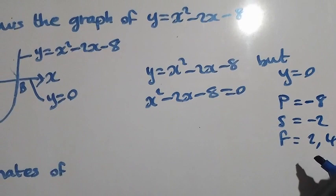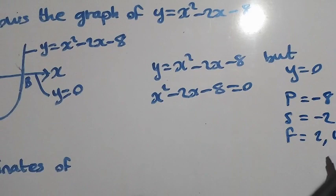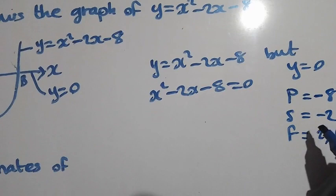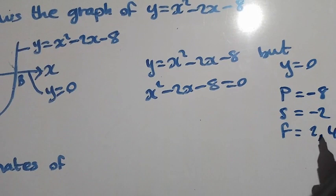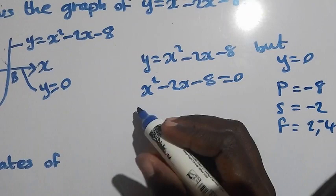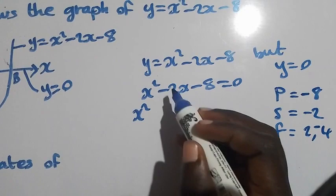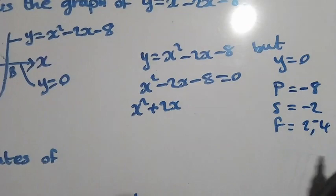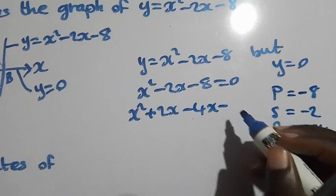Now we need negative 8 and negative 2. So between 2 and 4, one should be negative. What determines where the negative goes is the sum. Since the sum is negative, the sign comes from the bigger number, which is 4. So 4 should be negative. After finding the factors, we rewrite the equation as x squared plus 2x minus 4x minus 8 equal to 0.